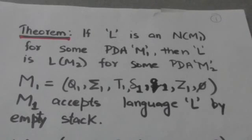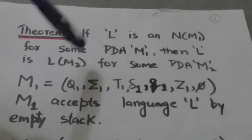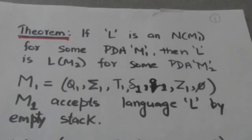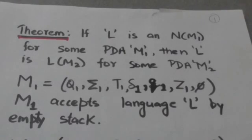Hello friends, welcome back. In this tutorial we will study a theorem. This theorem states that if there is a pushdown automata M1 which accepts the language L by empty stack, then the same language L is accepted by some pushdown automata M2 by final state. Now let us prove this theorem.